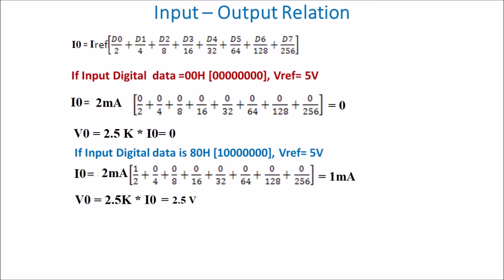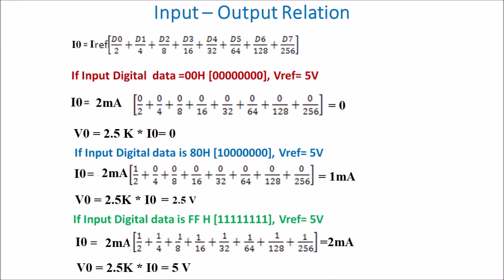If the digital input data is FFH — meaning all input bits are 1 — then the output current is 2 mA and the output voltage is 5 volt. So for a 0 digital input we get 0 volt, and for FFH we get 5 volt. The range of our output voltage is 0 to 5 volt.